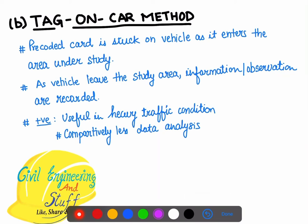The recording becomes very easy — that is the advantage over the license plate method. It is very useful in heavy traffic conditions where recording license plates becomes very difficult, while identifying tags on cars is completely easy. Comparatively, less data has to be collected — you just have to look for the tag on the car. This was the tag on car method.